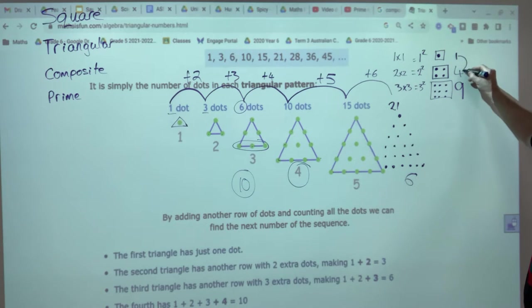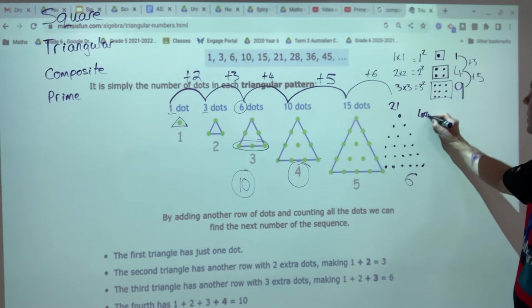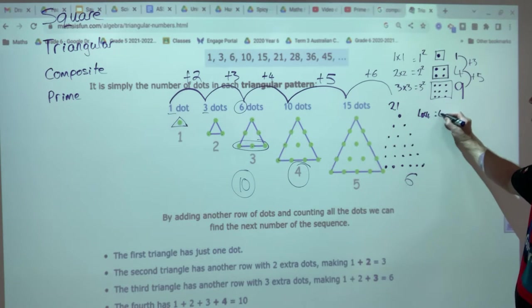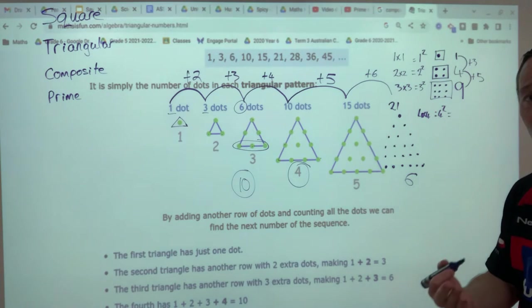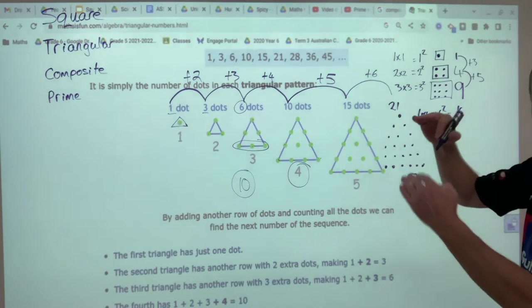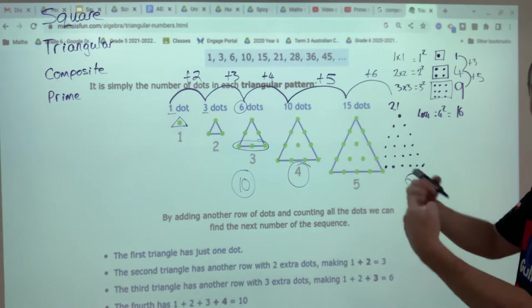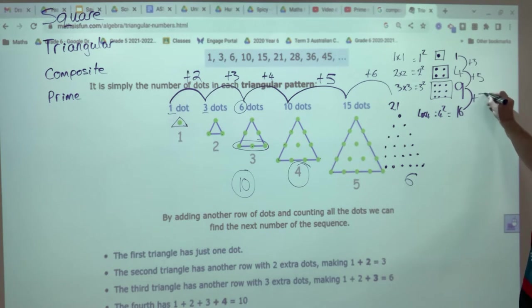And again, you might see a pattern happening here. This is plus three. This is plus five. What do you think the next one might be? Four times four, which is four squared. And if you know that, that would give you 16. Which, if you drew it, it would have four times four. It's like an array. Four times four, 16. So from nine to 16, it's a jump of seven.